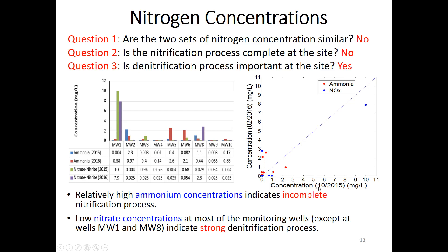The ammonia and nitrate data in 2015 and 2016 are not similar. This plot shows ammonium/ammonia and nitrate concentrations in 2015 and 2016 — a lot of data are spread out and not concentrated along the one-to-one line. The ammonium concentration can be as high as the nitrate concentration, indicating incomplete nitrification.